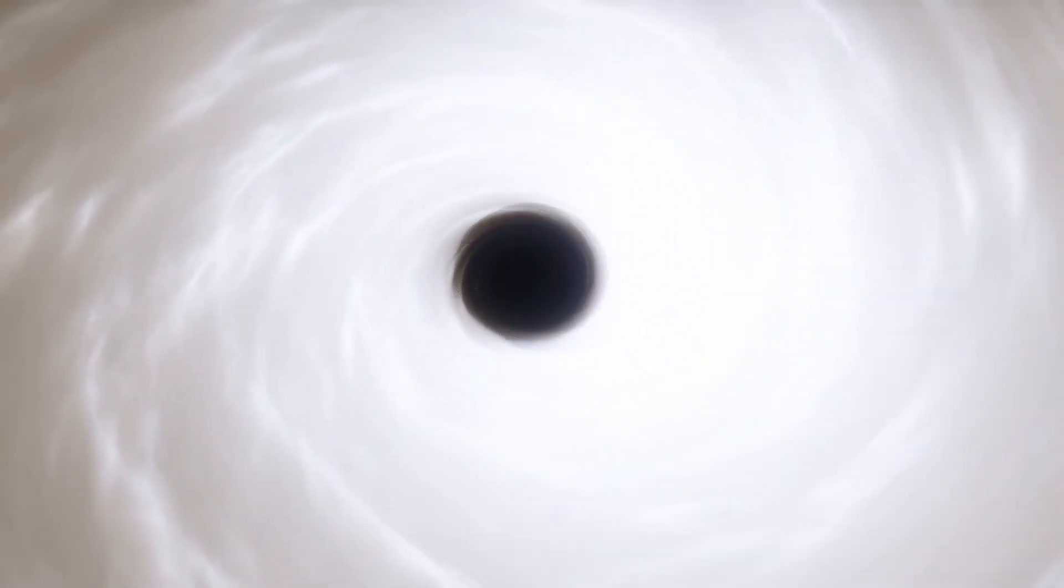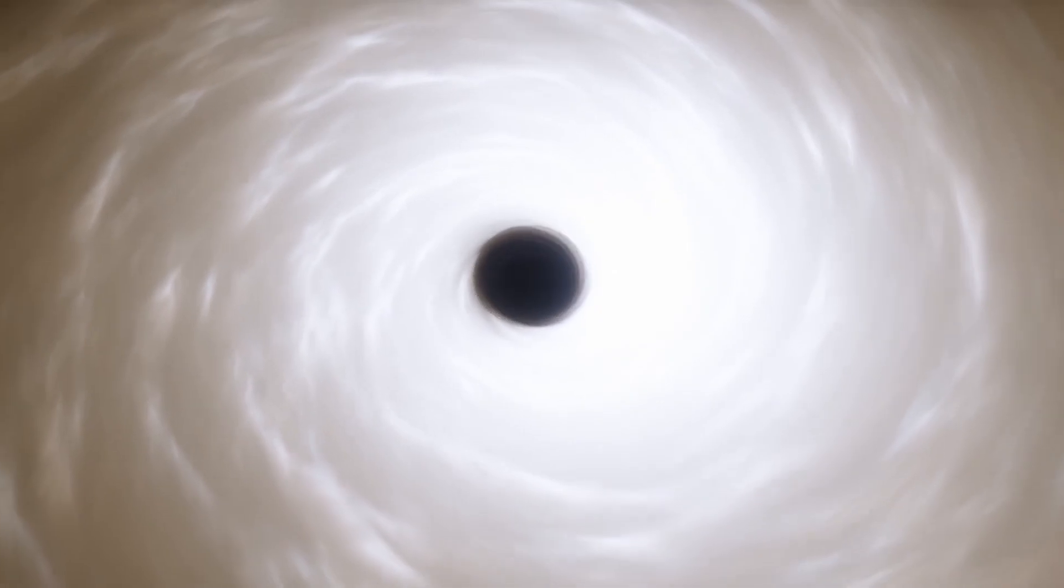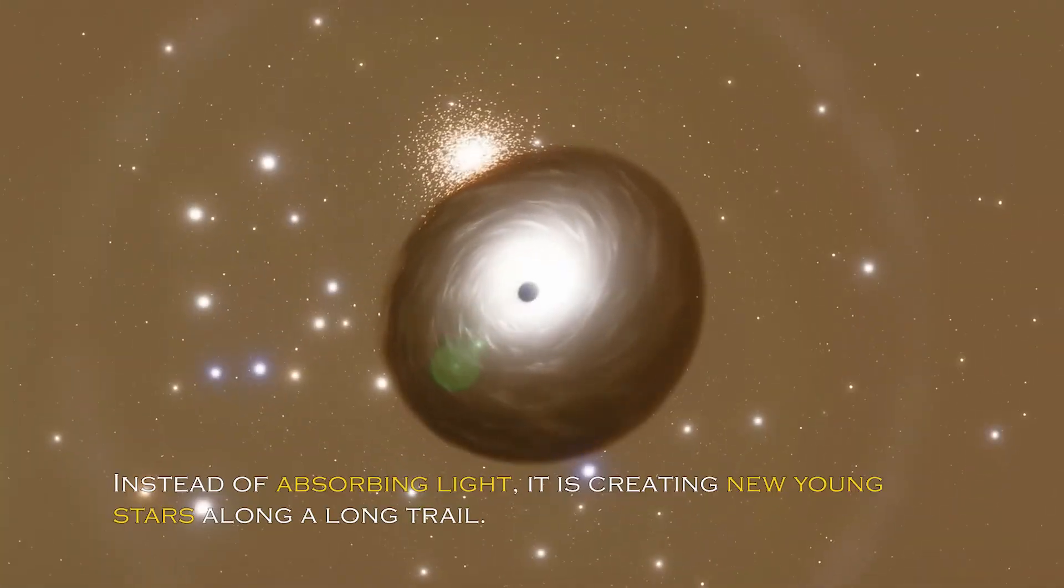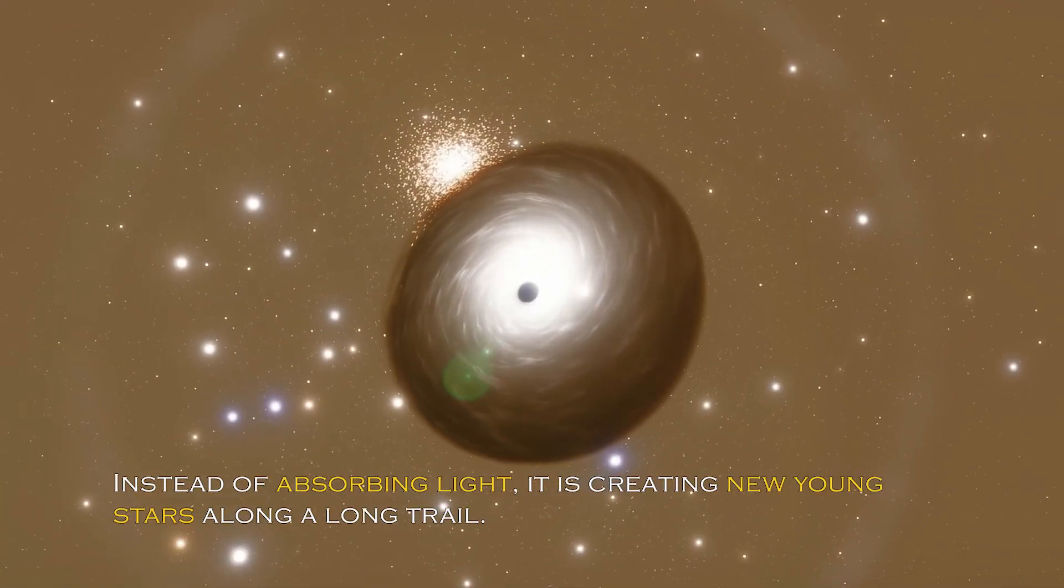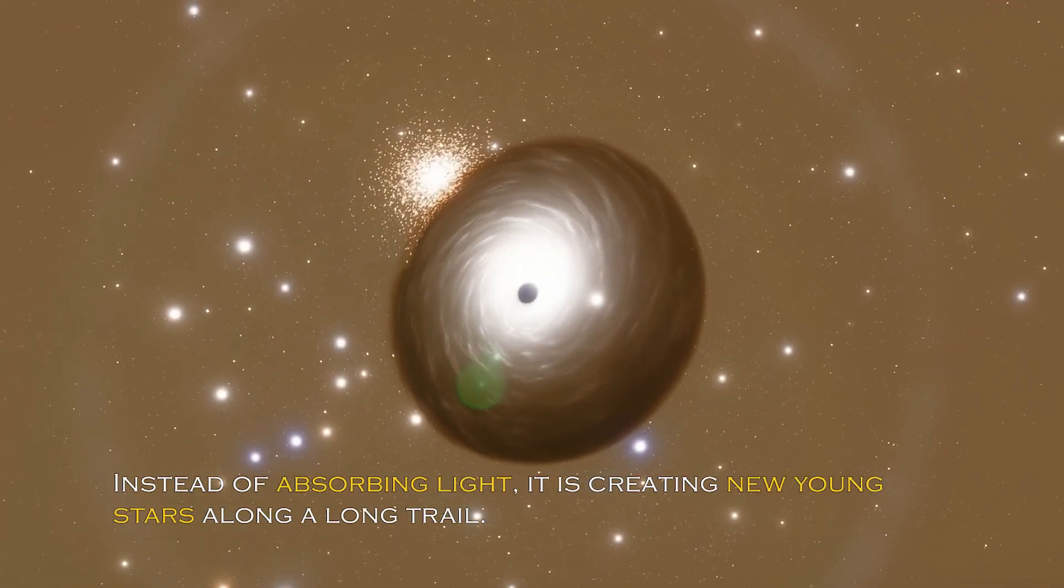Black holes are generally thought of as huge entities that pull everything including light towards them. But the recently observed black hole appears to be having the opposite effect. Instead of absorbing light, it is creating new young stars along a long trail.